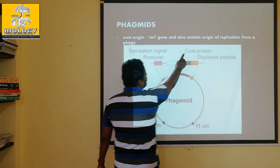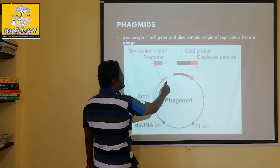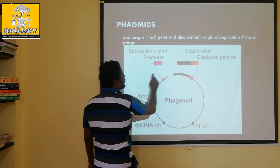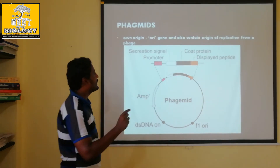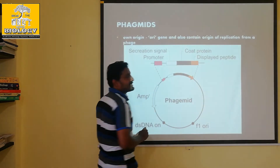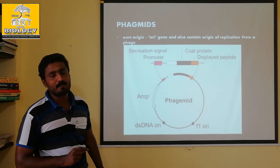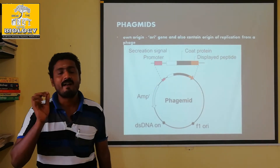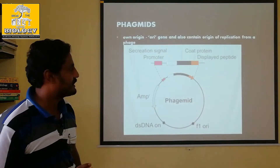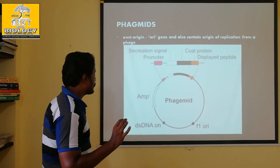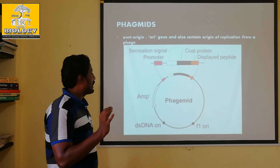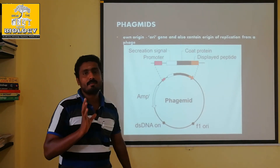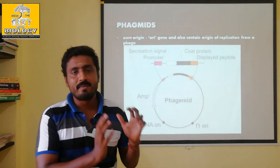Coat protein and displayed peptide — it is actually a virus. Protein is produced with definite, desirable genes. So phage DNA is also acting as a vector. We can use it with desirable characters in bacteria such as E. coli, using the plasmid and phage together.